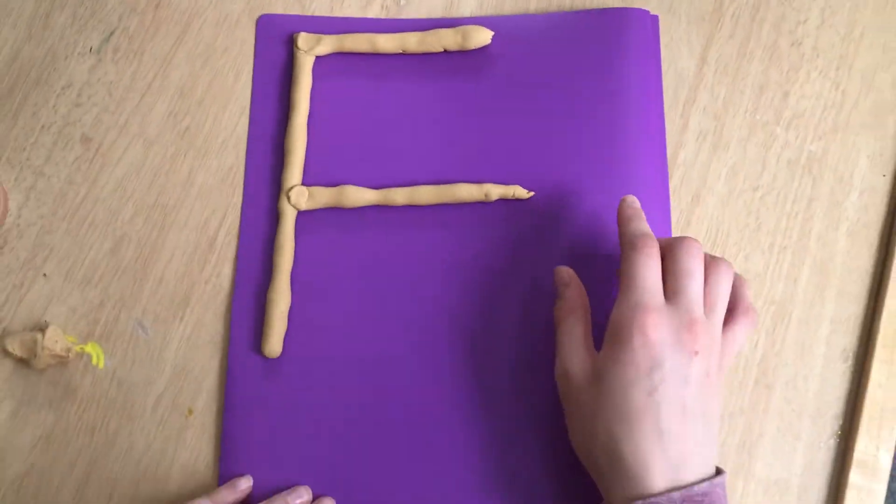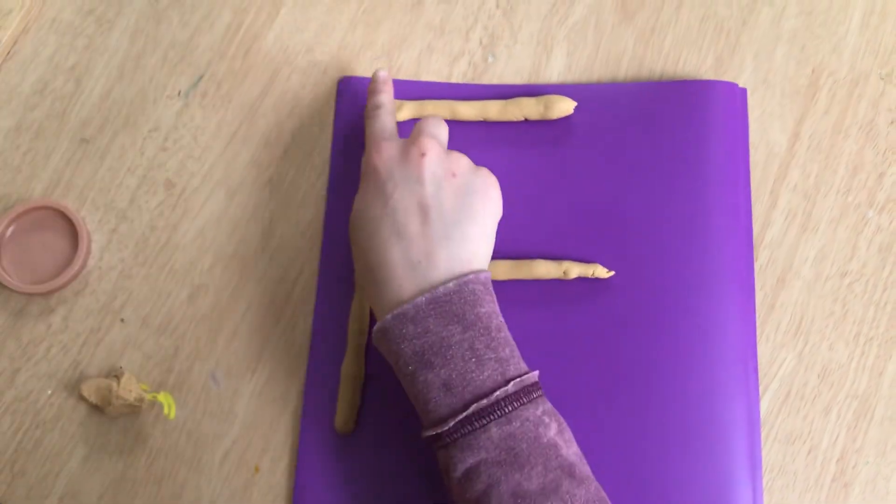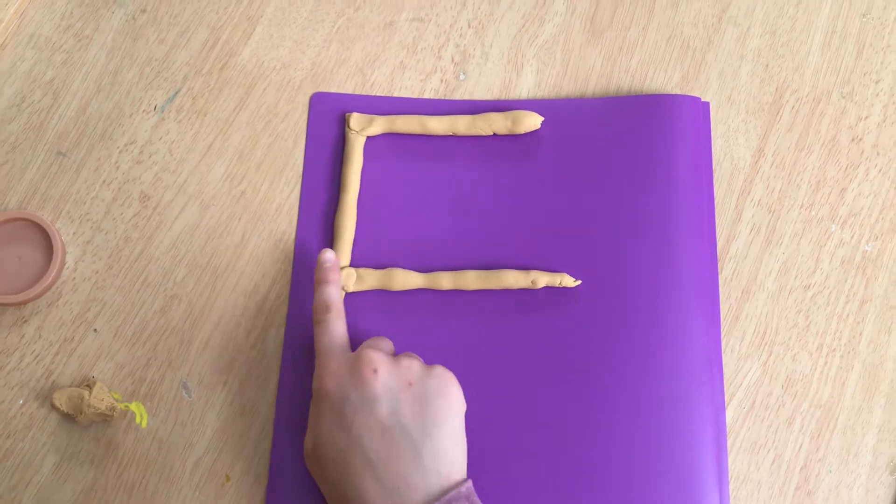Now let's trace it. Big line down, frog jump up, give it a top, give it a middle.